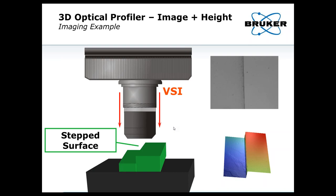Scanning faster, you can trade some of that resolution for speed — on the order of 50 nanometers or even perhaps 0.1 microns in exchange for scanning much faster. This example was scanned at a slow scan rate of just 5 microns per second. But in general, if someone has a much larger step or larger surface, you can scan much more quickly and over a wider field of view to get data more rapidly.